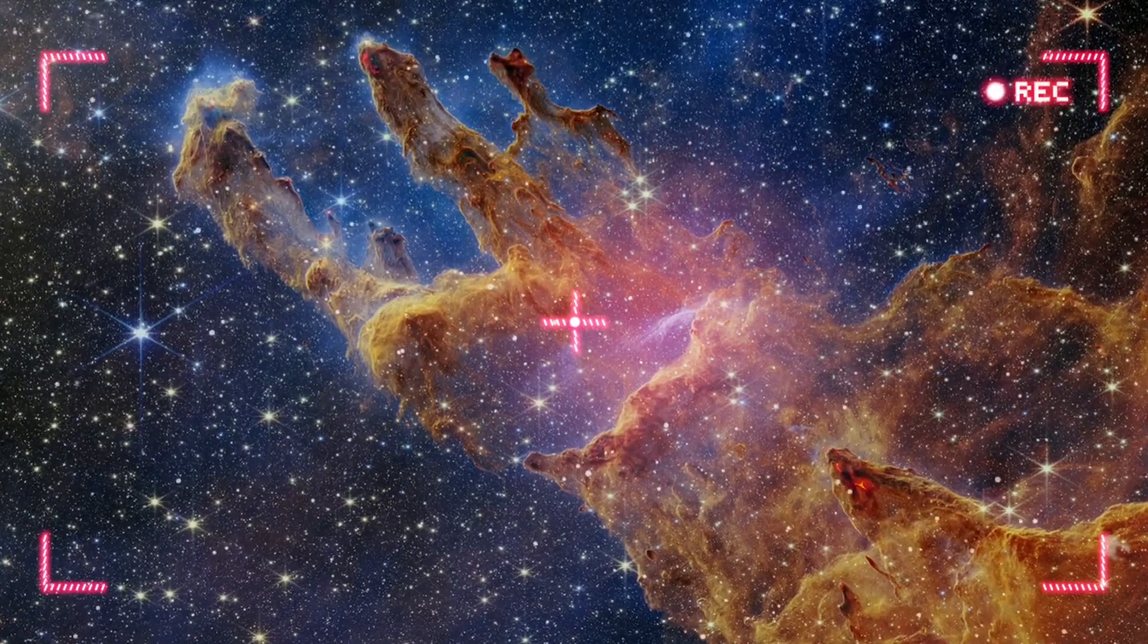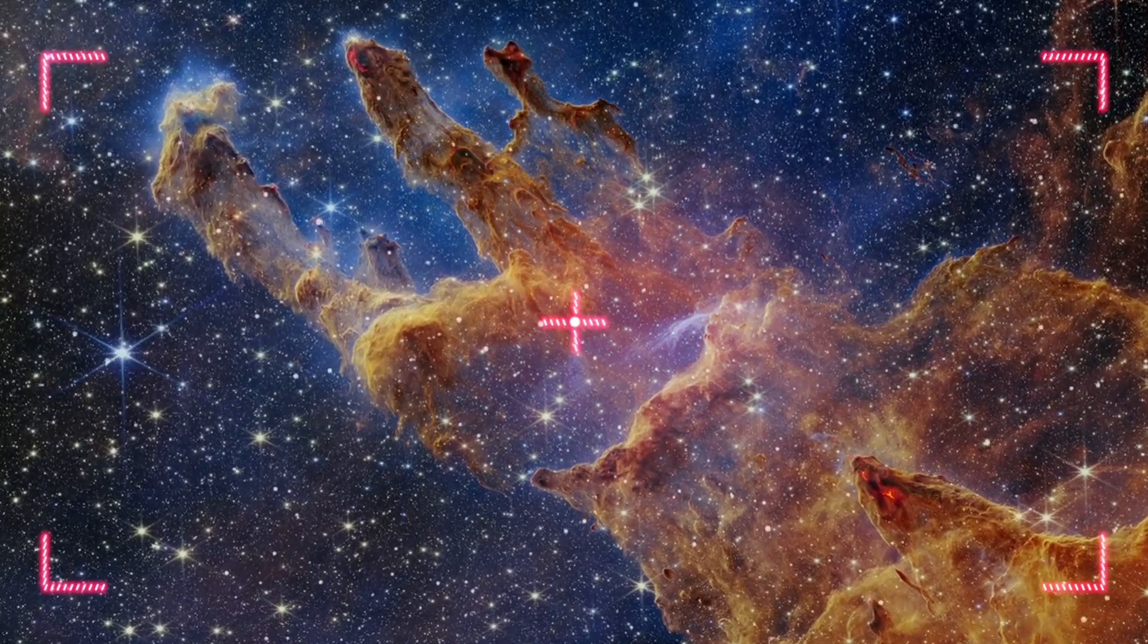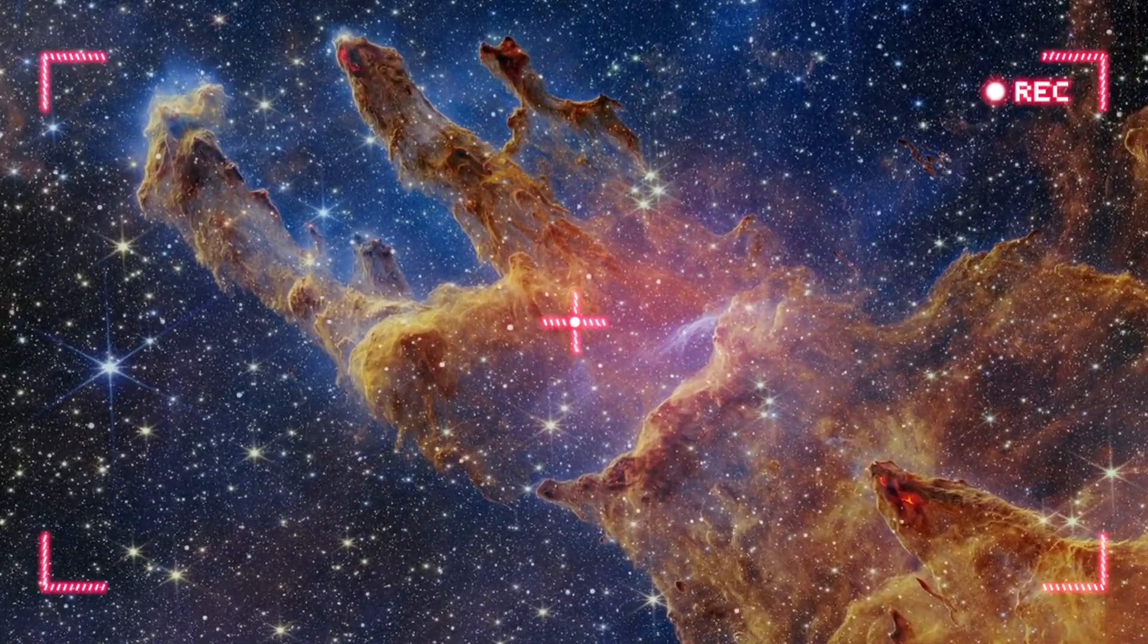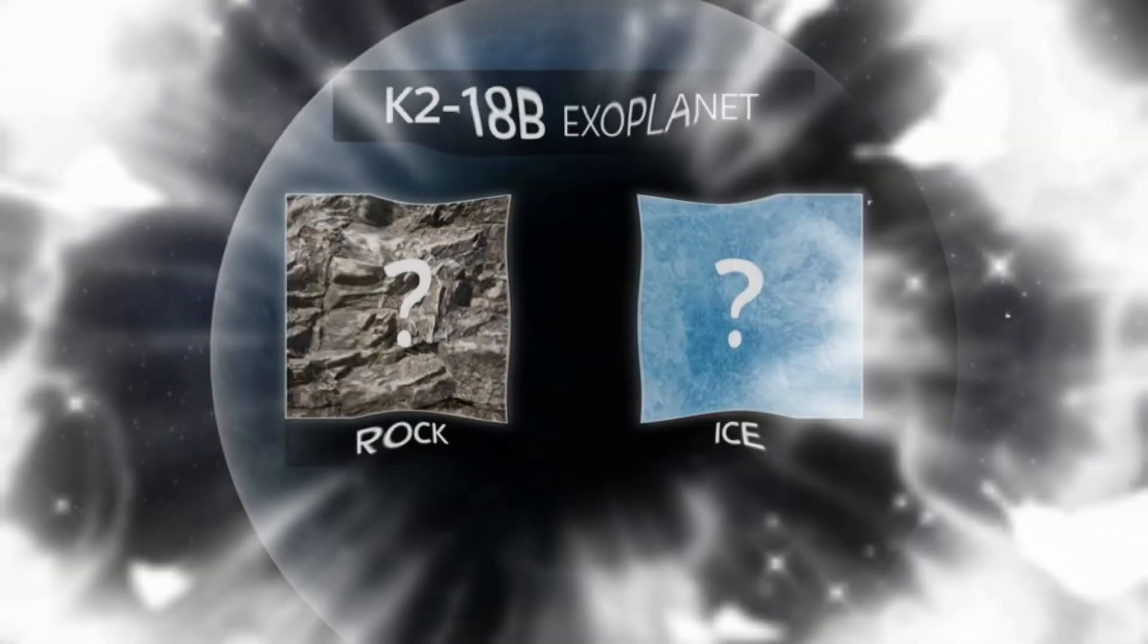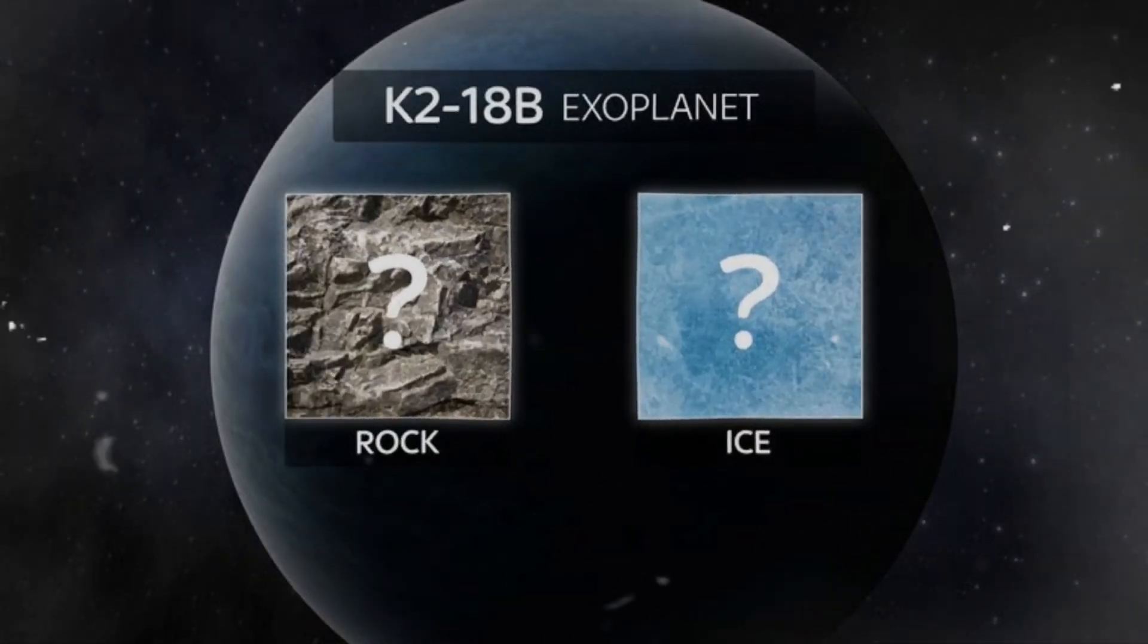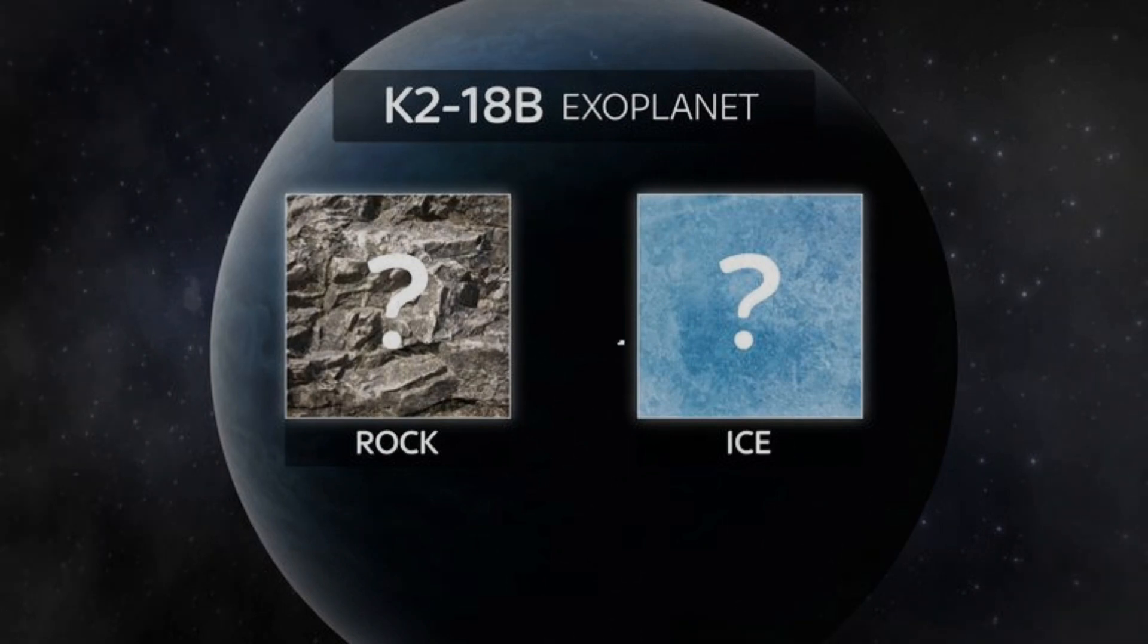This likely serves as an early indication of the telescope's capabilities in observing habitable zone exoplanets. Only time will confirm whether life exists on K-218b, and if so, whether humans can consider it a viable alternative to Earth.